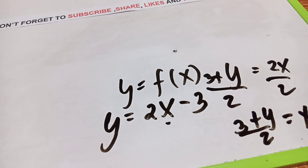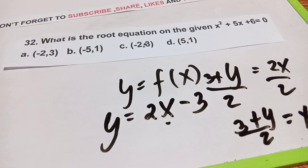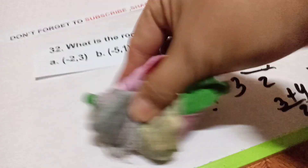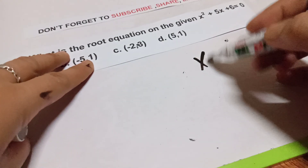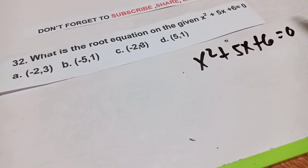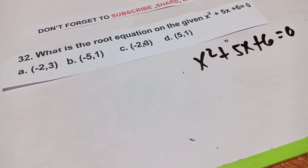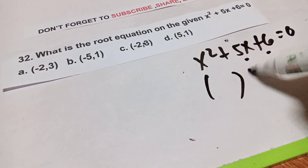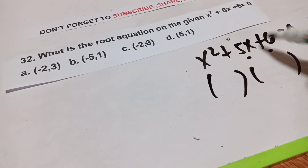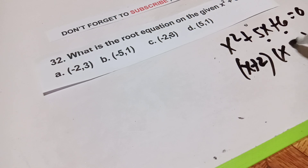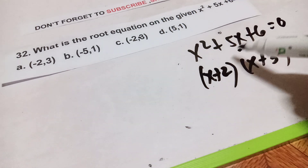Question number 32: what are the roots of x² + 5x + 6 = 0? This is very easy. You can use three methods: the quadratic formula, completing the square, or the factoring method. We need to find two numbers whose product is 6 and whose sum is 5, so we use x + 2 and x + 3, since 2 + 3 = 5 and 2 × 3 = 6.